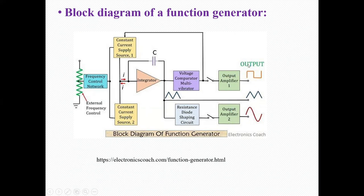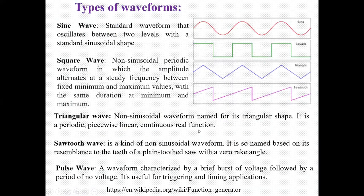These are the output waveforms: square wave, triangular wave, and sine wave. Now looking at the types of waveforms in this image, we have sine wave, square wave, triangular wave, and sawtooth wave.